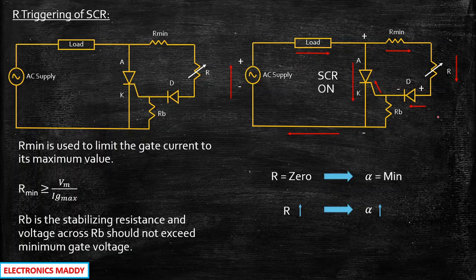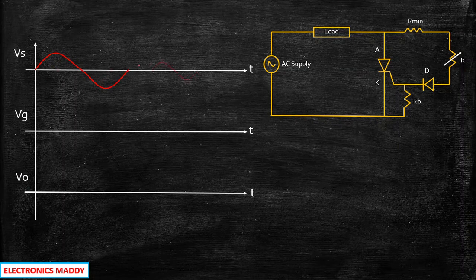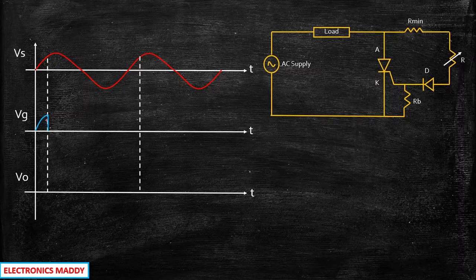Now we need to understand the main drawback of this circuit, and that can be understood with the help of waveforms. We will look at the supply voltage waveform, the gate voltage waveform, and the output voltage waveform. The supply is sinusoidal — positive and negative — and we are considering two cycles. Let us say we turn on the SCR at some firing angle alpha, and at that point we give a gate pulse, with the highest voltage applied at that instant.